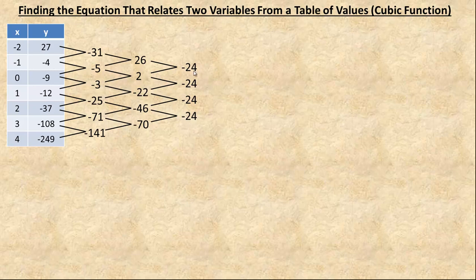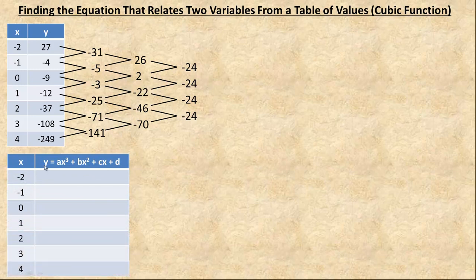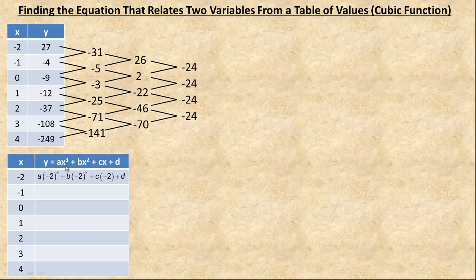Now that we know it is cubic, we have to create the generic table for a cubic function. I am going to call the function y equals ax cubed plus bx squared plus cx plus d — if you want to use different constants that is fine. It makes this a little bit less complicated if you use the same x values for the generic table that you do for whatever table you are given. If I put negative 2 in place of x, negative 2 cubed would be negative 8 so that is going to be negative 8a. Negative 2 squared is 4 so that is going to be 4b. And negative 2 times c would be negative 2c.